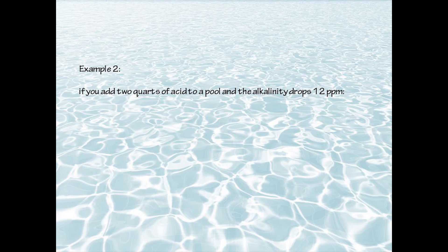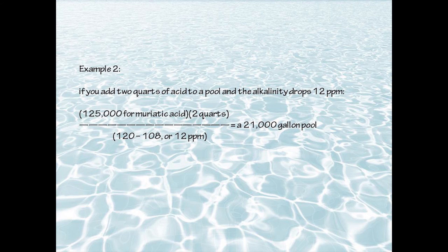Here's another example. If we add two quarts of acid to a pool and the alkalinity drops 12 parts per million — from 120 to 108 — the formula number for muriatic acid is 125,000. So we multiply 125,000 times two quarts, then divide by 12, and we find out that this is a 21,000-gallon pool.